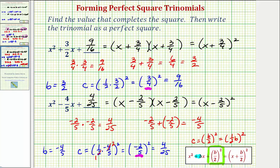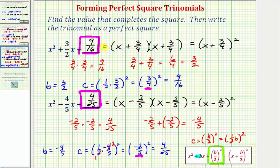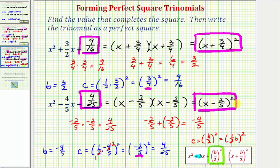To make sure we understand what's happening here: we were asked to determine the value that completes the square. The value was nine sixteenths for the first example, and four twenty-fifths for the second. As a perfect square, the first example was the quantity X plus three fourths squared, and the second example was the quantity X minus two fifths squared. I hope you found these examples helpful.